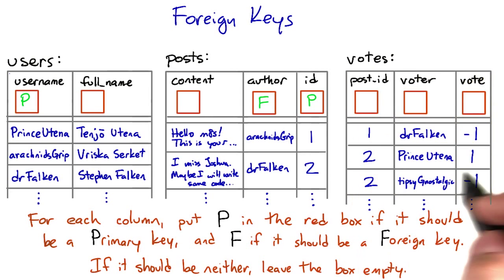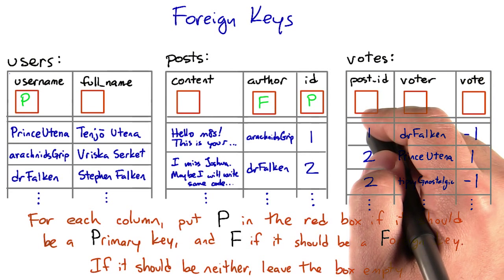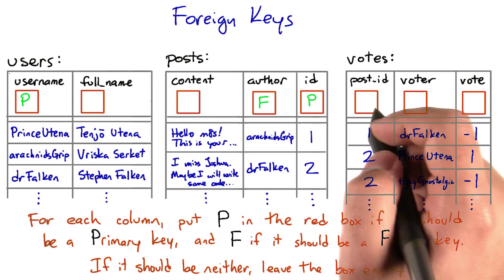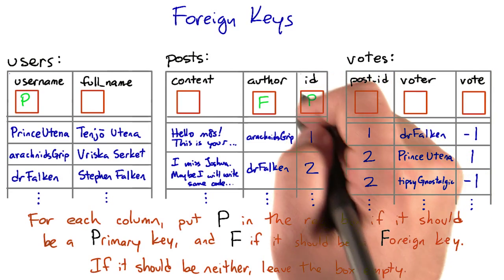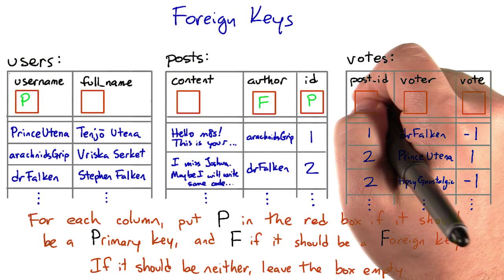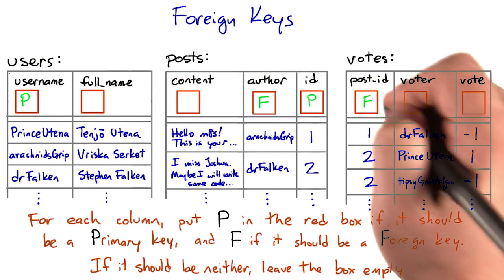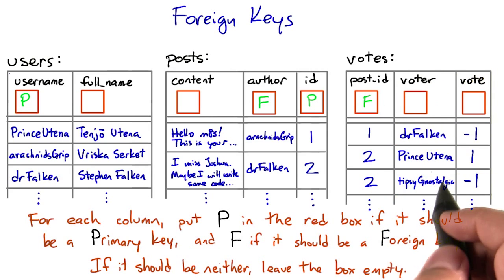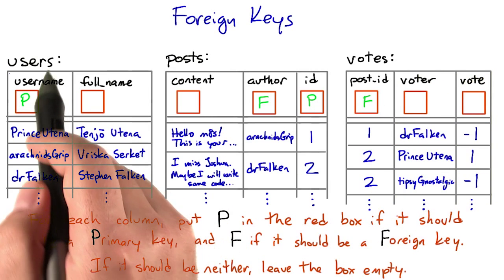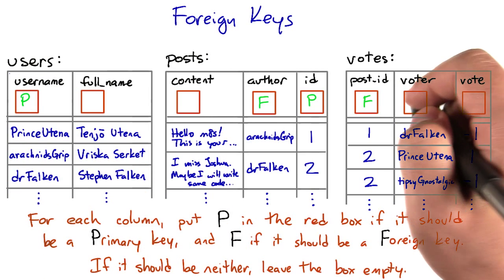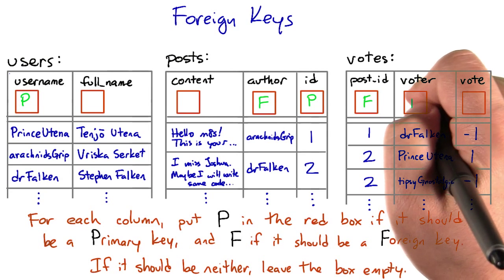Lastly, there's the votes table. The post_id column here seems to refer to the ID column in posts, which would make that a foreign key. And the voter column refers to the username in the users table, so that's also a foreign key.